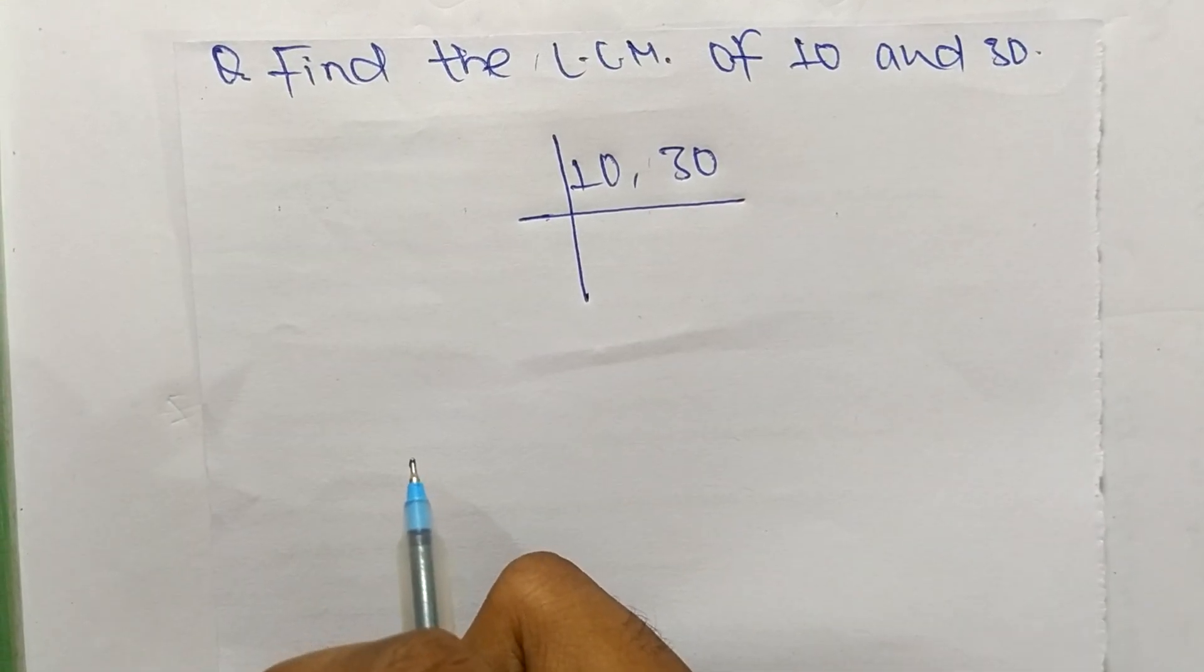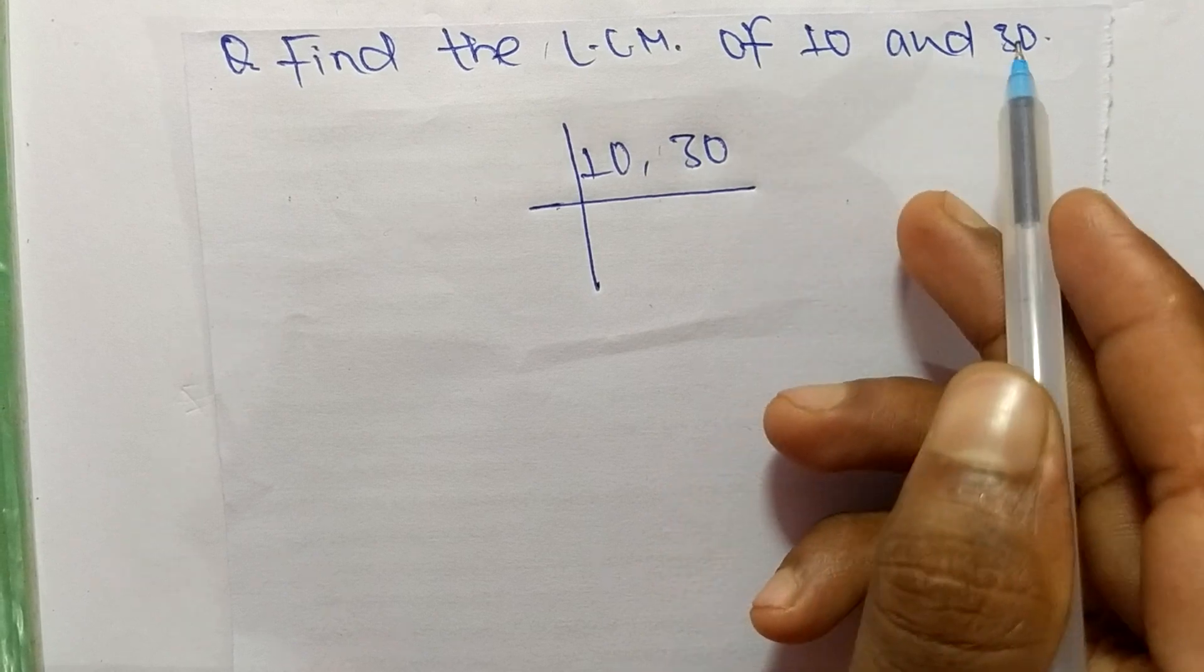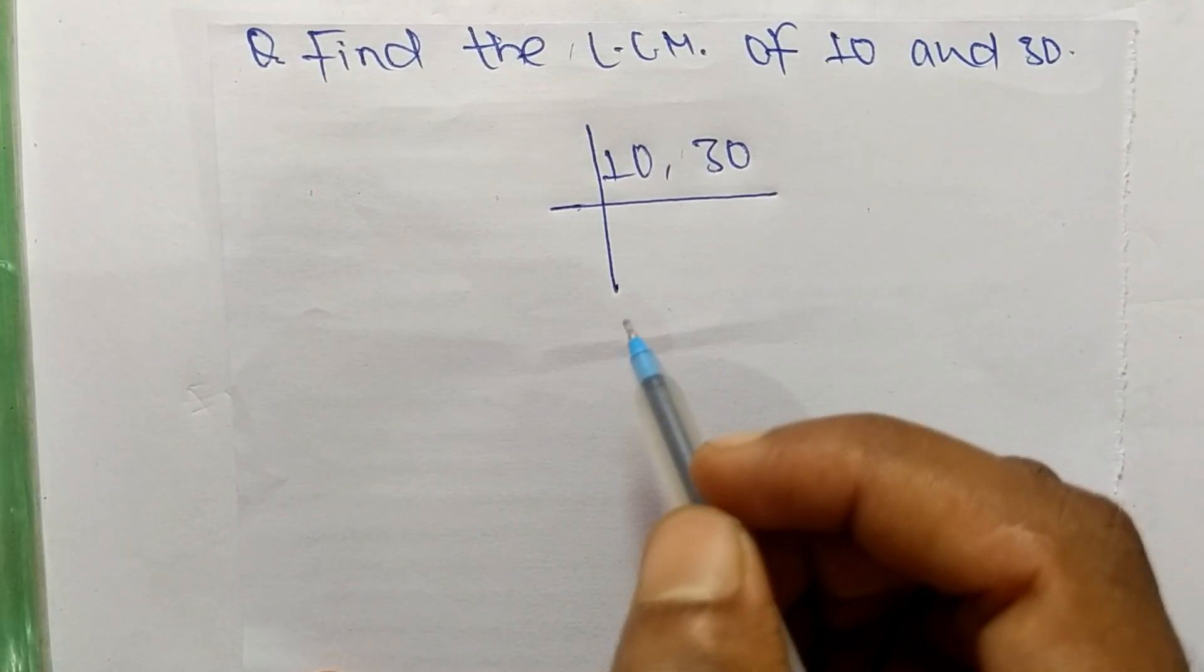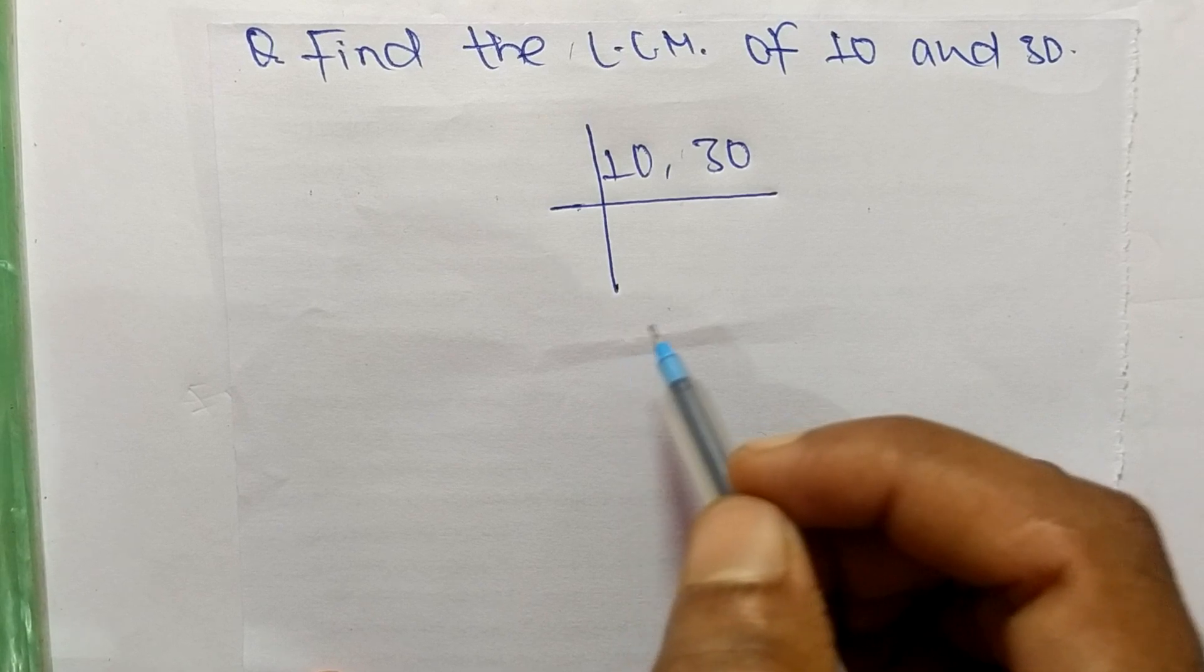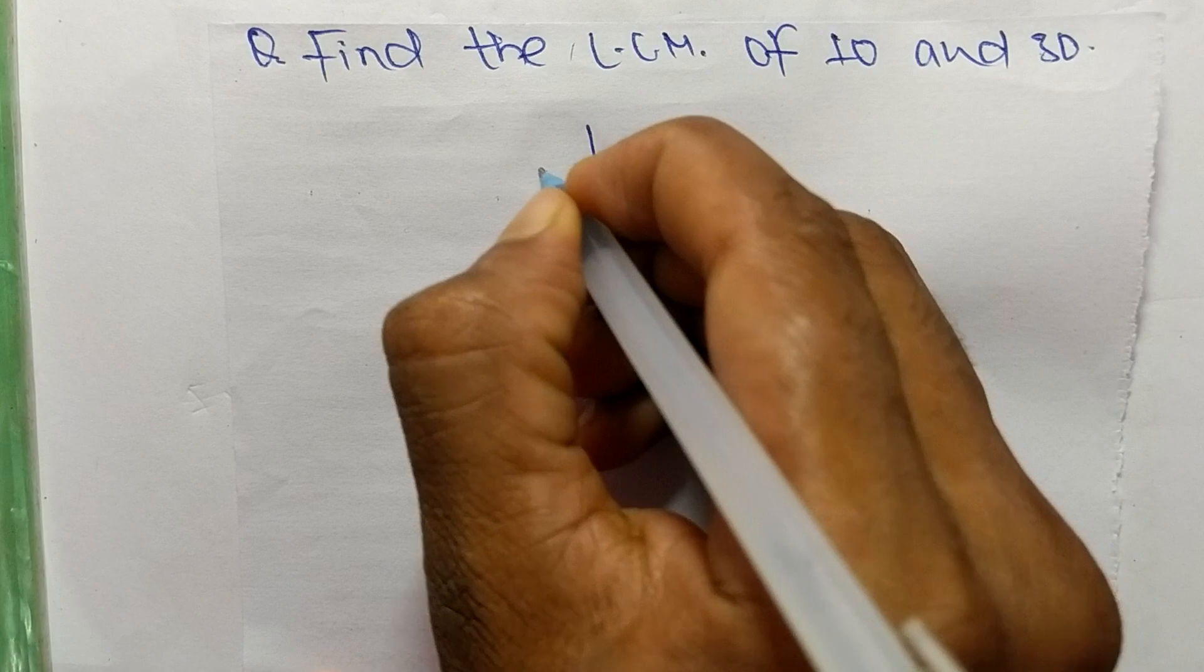So today in this video we shall learn to find the LCM of 10 and 30. To find LCM, first of all we choose the lowest number which can exactly divide 10 and 30. So the number we get is 2.